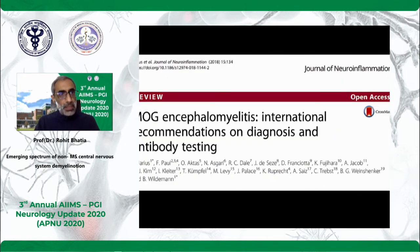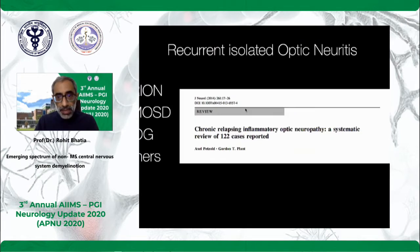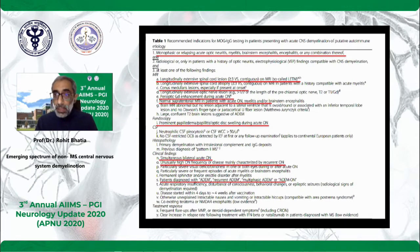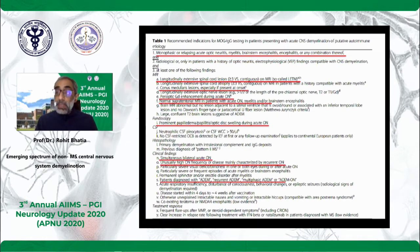Based on this, criteria for diagnosing MOG were published about two years ago as recommendations. If you have a monophasic or relapsing optic neuritis, a brainstem encephalitis, or a combination, or if you have LETM — especially an early conus medullaris lesion — think of MOG more than NMOSD. If you have a normal supratentorial MRI with recurrent isolated optic neuritis, that's more common for MOG than NMOSD. If you have prominent papilledema or a papillitis-like presentation, that may be more common in MOG.